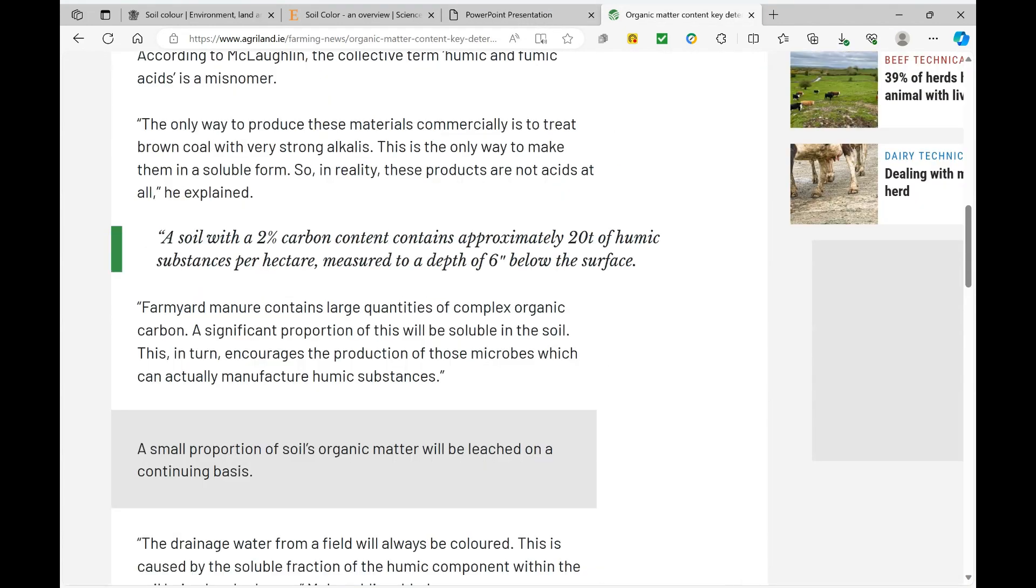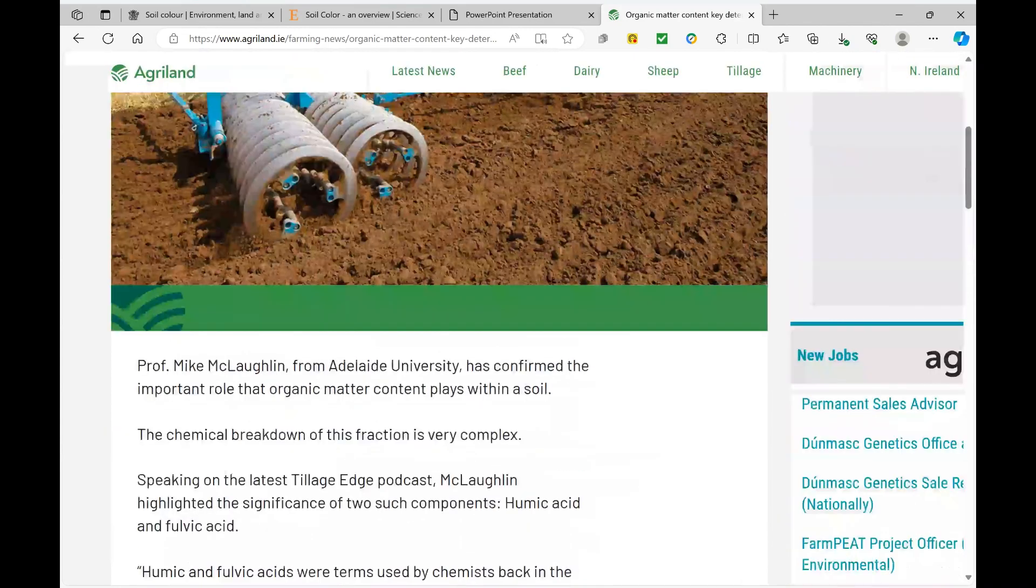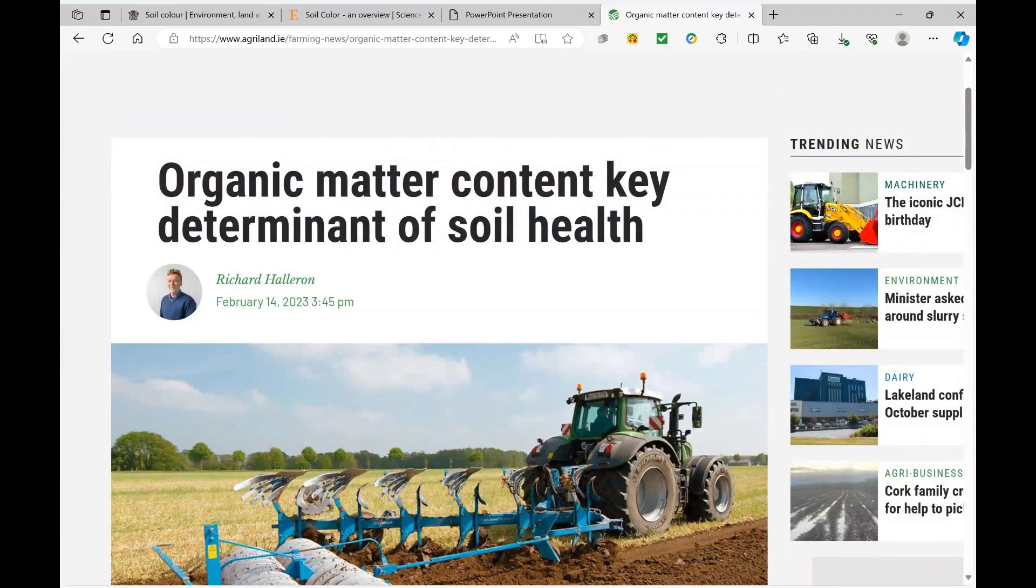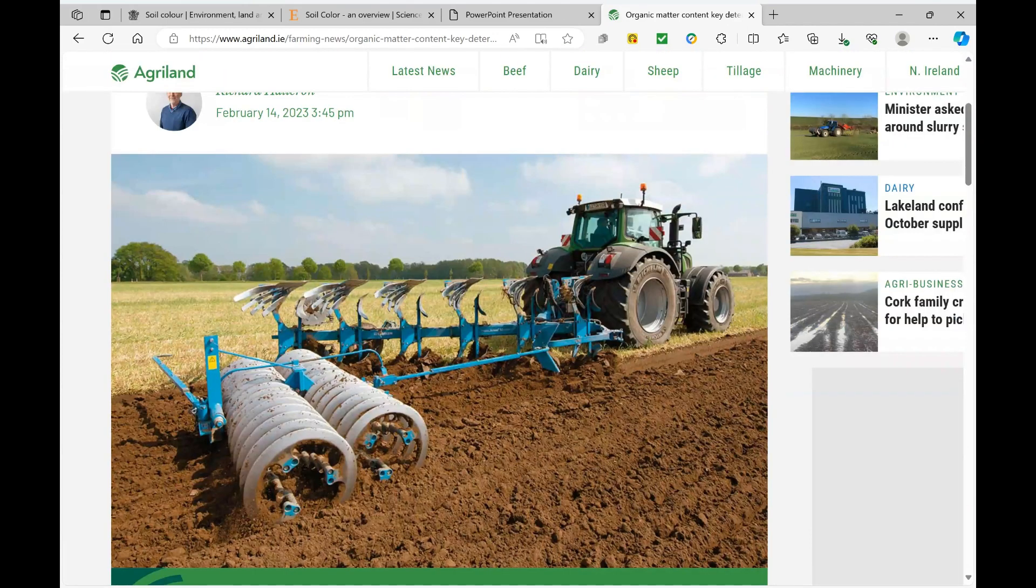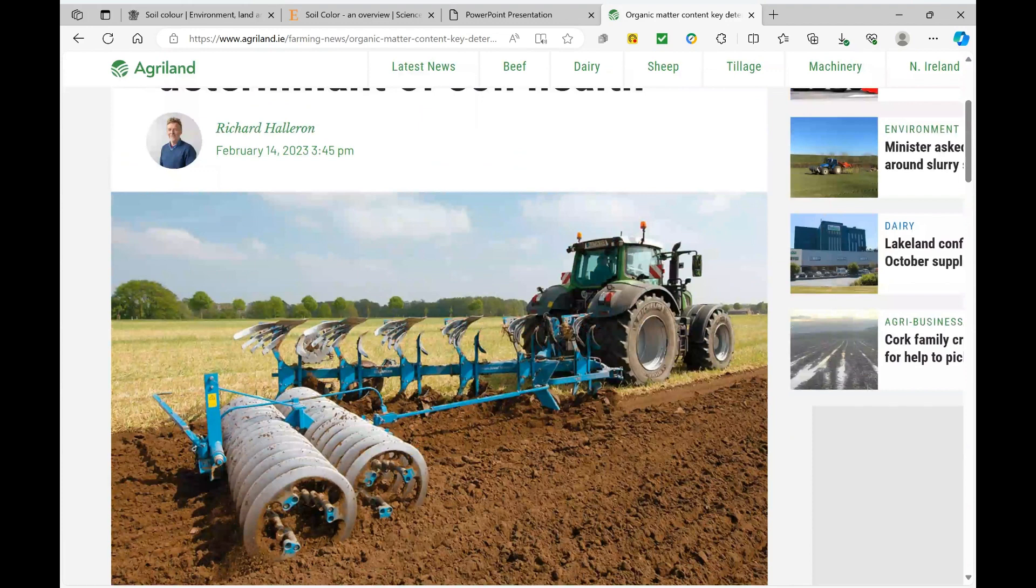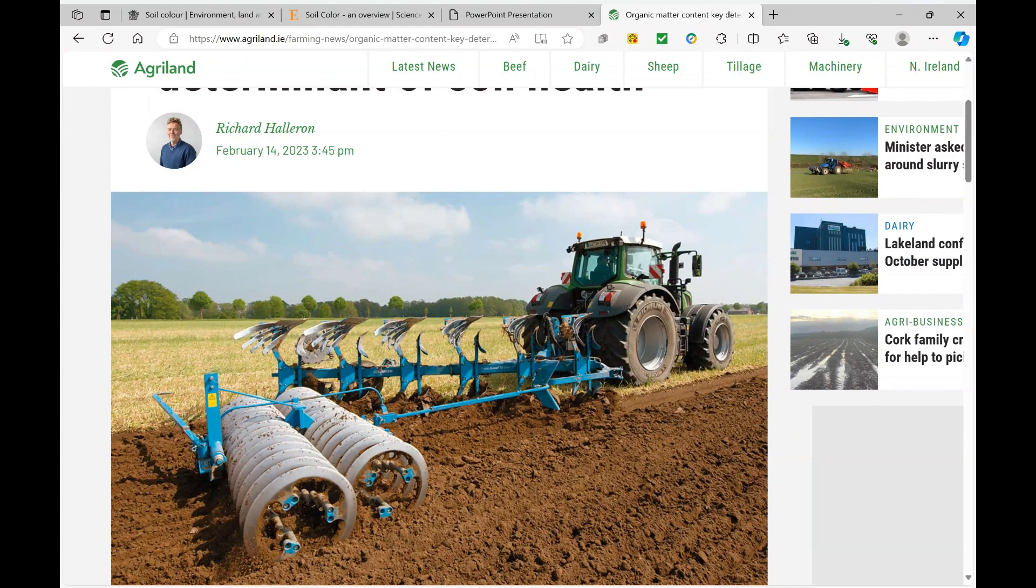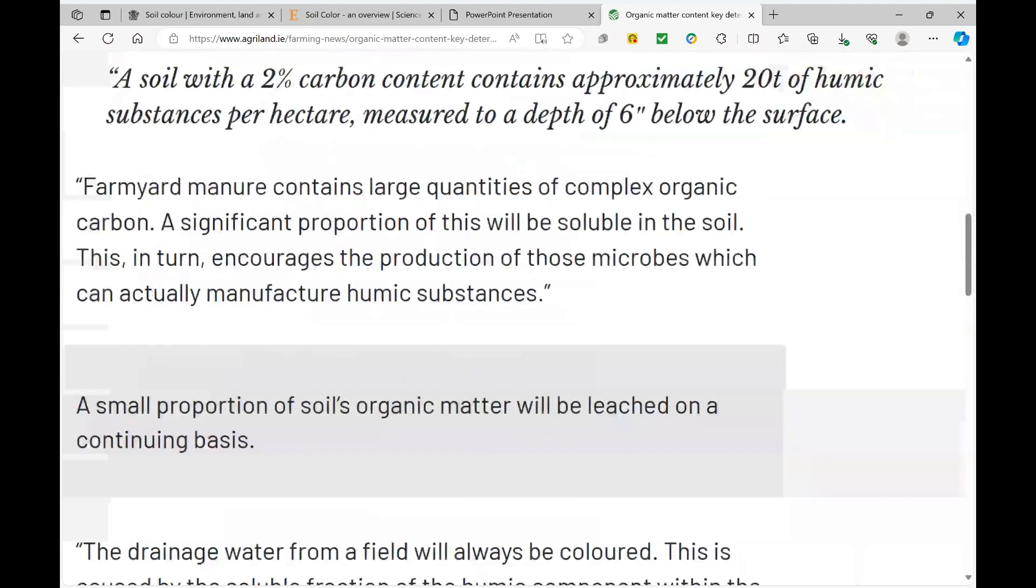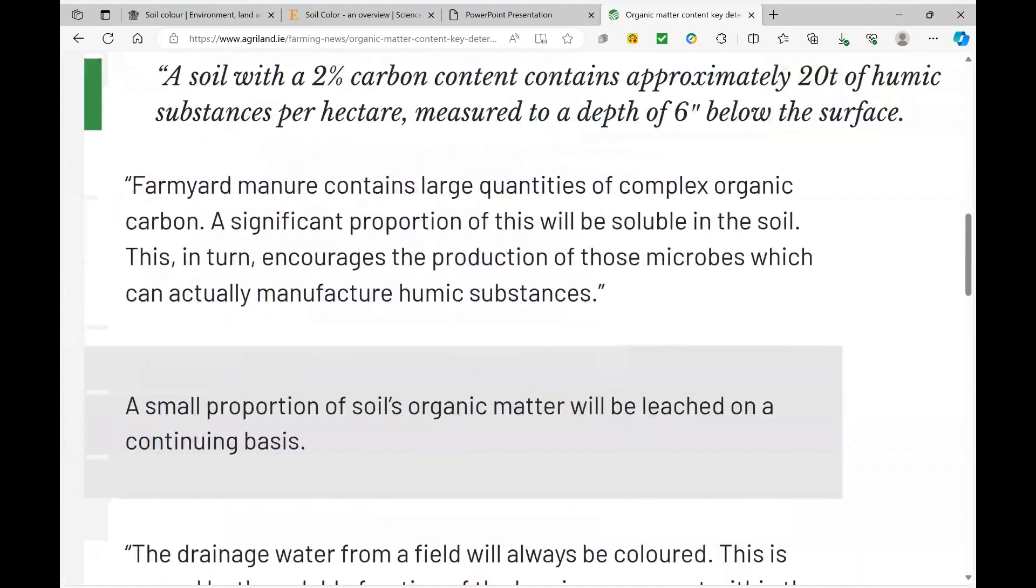The last piece of research I looked at was from Agriland, the title was 'Organic Matter Content Key to Determinant of Soil Health.' It was produced in 2023 on February 14th. I have the person who wrote it, so if I need to reference it, I have all the details and it's quite recent so it will be up to date. Scanning down through it, something that interests me: farm yard manure contains large quantities of complex organic carbon, a significant proportion of this will be soluble in the soil. This in turn encourages the production of those microbes which can actually manufacture humic substances.